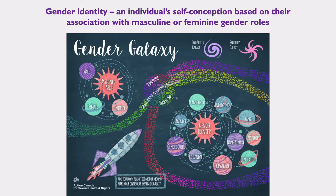The first thing to define is gender identity — an individual's self-conception based on their association with masculine or feminine gender roles. This figure helps illustrate, in terms of sexual health rights in Canada, the differences in assigned sex — male, female, or intersex — and then the plethora of gender identities that are out there.